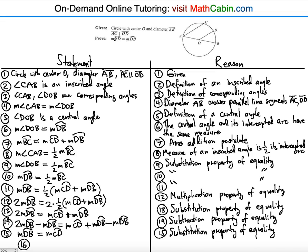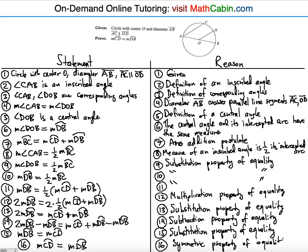The final step: the result is on different sides from what we want to prove, so we apply the symmetric property of equality — you can switch sides of an equation and it still holds true. Therefore, measure of arc CD equals measure of arc DB, and the proof is complete.